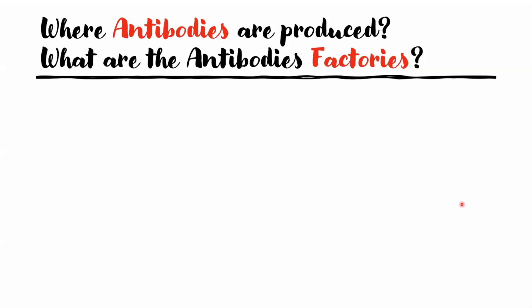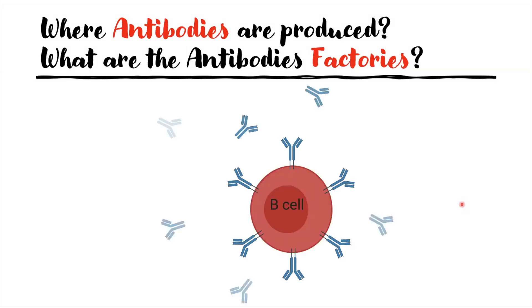What are the antibody factories? Antibodies are produced by a specific type of white blood cells called B cells. These B cells are born in the bone marrow and mature to become the factories of the antibodies, as you can see here. When they mature, they are called plasma B cells.